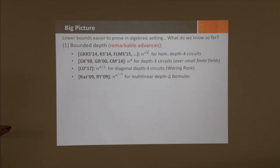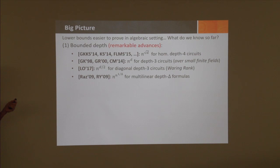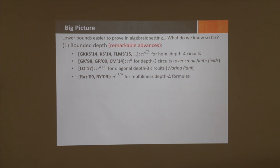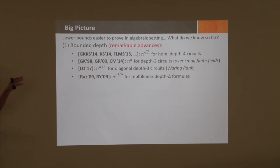Very recently this year, Landsberg and Ottaviani gave an n^{d/2} lower bound over the complex numbers for diagonal depth-three circuits, which is the Waring rank. In 2009, Raz and Amir proved a lower bound of n^{n^{1/δ}} for multilinear depth-δ formulas. These are the rough pictures—the exact statements are somewhat more precise.